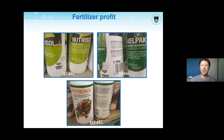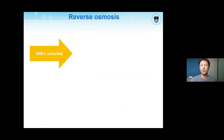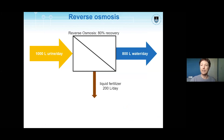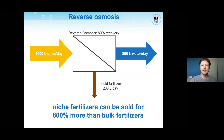Here you see the range of prices in South Africa — compared to U.S. dollars — that you can typically sell this for. The idea is to use reverse osmosis to concentrate the urine, producing water along with a liquid fertilizer concentrate, which can be sold as a niche fertilizer for up to 800% more than bulk fertilizers. The beauty of this process is that it essentially has no waste stream, because it produces only water and liquid fertilizer.